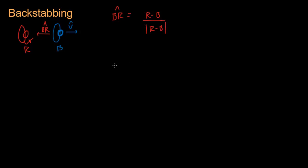So now all we have to know is: are these two vectors facing in the same direction? In other words, is B looking at R? If R is over here on this side, then the view vector BR will point this way. But if R is behind, then you can see the vectors face the opposite direction. So we want to test whether or not the red player is behind the blue player, and we can do that with a dot product.